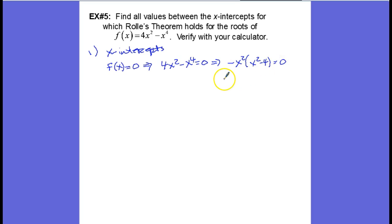Setting these two equal to zero respectively by the zero product law, we have x = 0, and this is a difference of squares, and so we have x = -2 and x = 2.